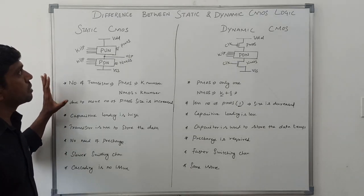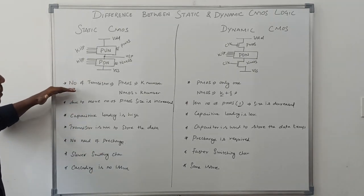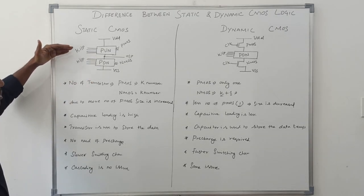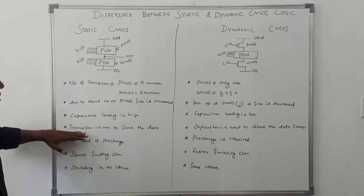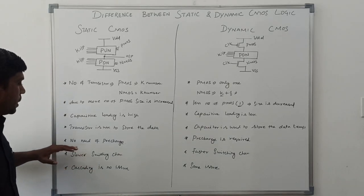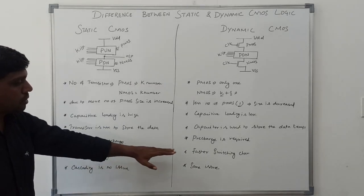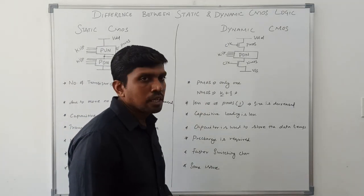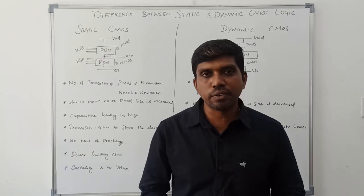So that is the basic difference between static and dynamic CMOS. The points covered are: structure, number of transistors, size impact due to PMOS count, capacitive loading, data storage method (transistor vs capacitor), pre-charge requirement, switching speed, and cascading behavior. I hope you understood the concept well. If you are watching for the first time, kindly subscribe and support us to make more videos. Thank you.